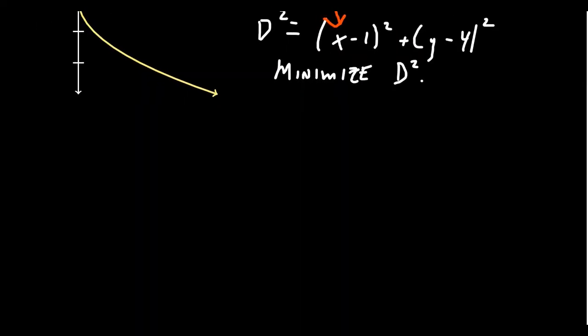All right, so let's see what it would look like. Let's take d squared is equal to y squared over 2 minus 1 squared plus y minus 4 squared. So now this thing is prepped for taking derivatives.